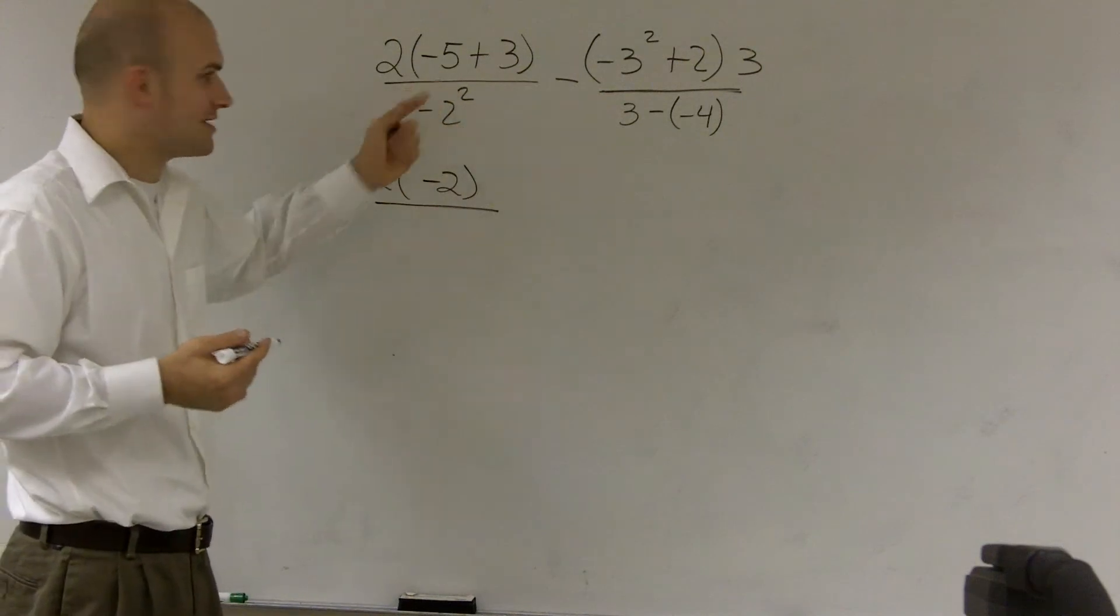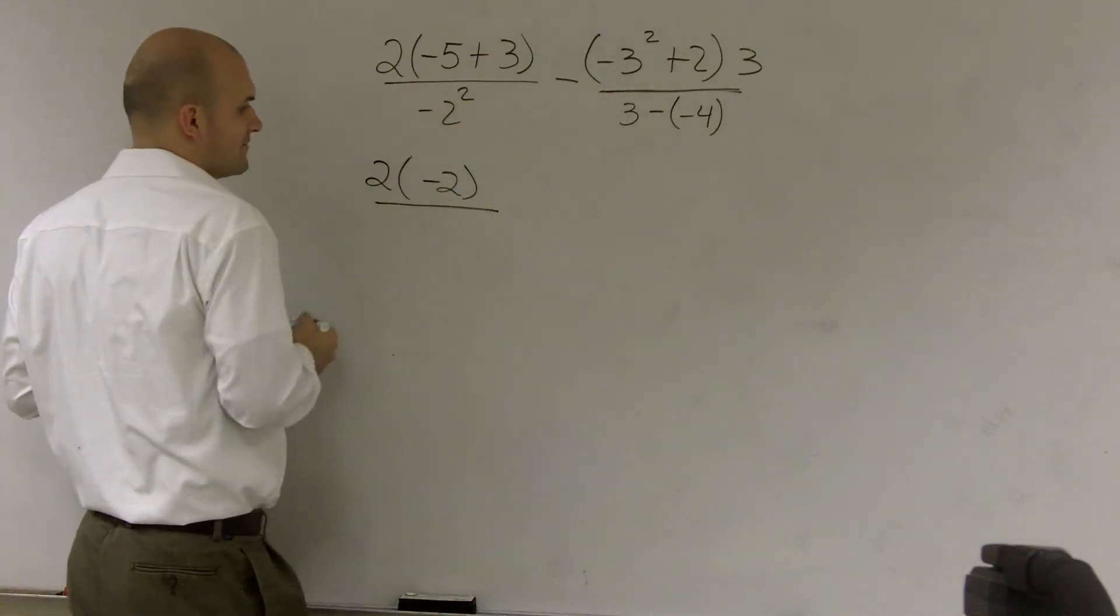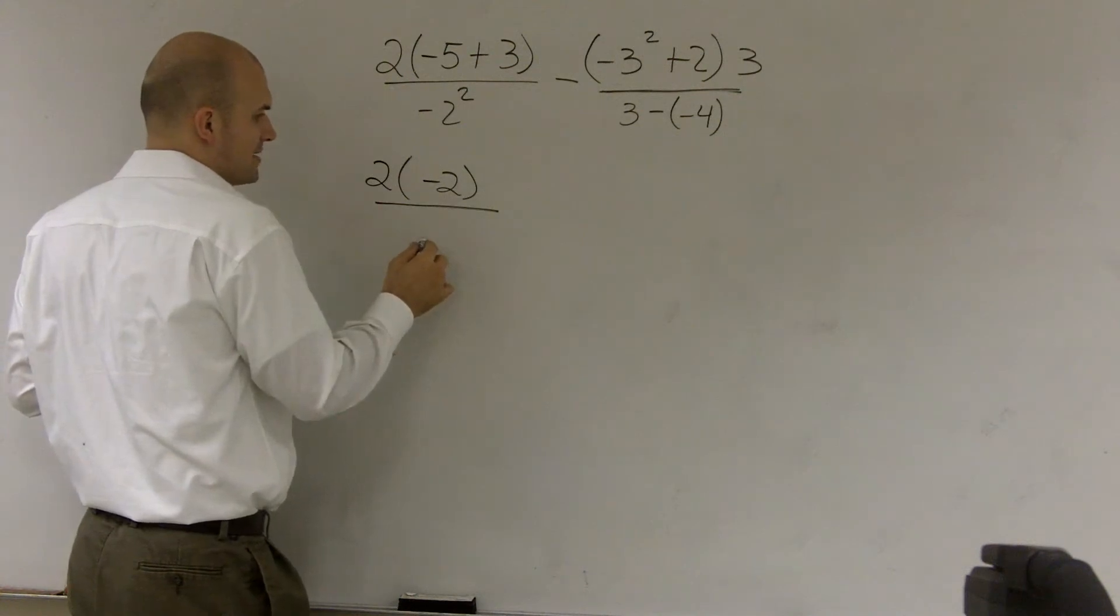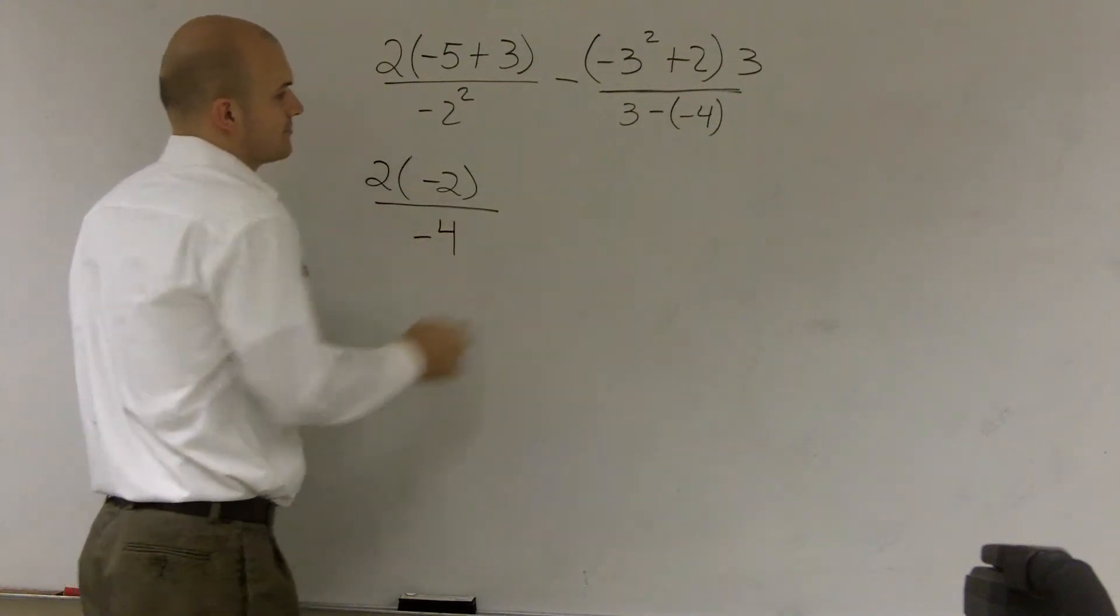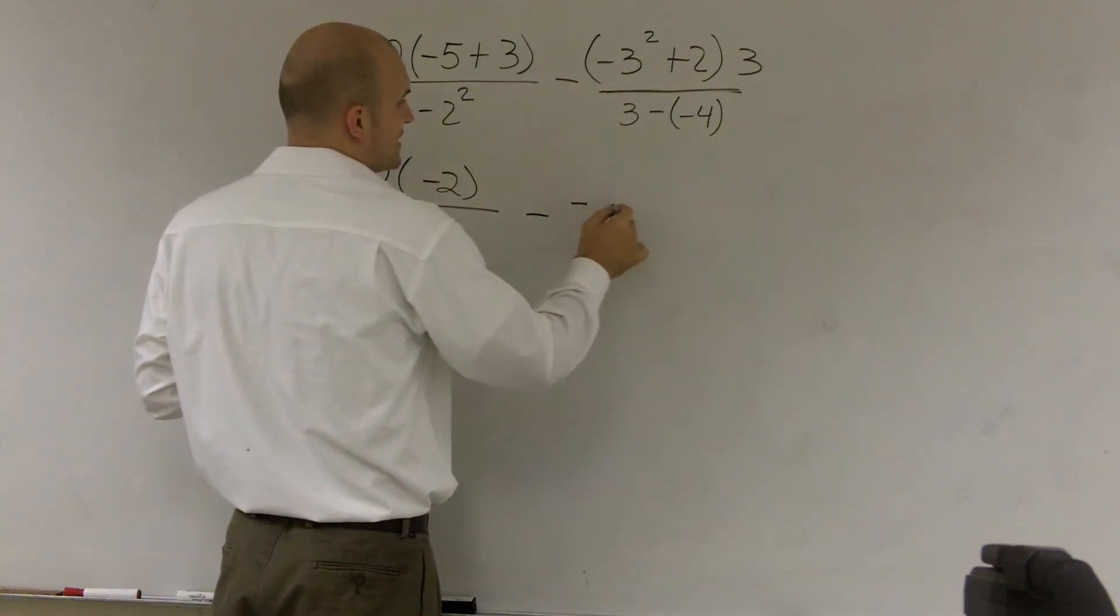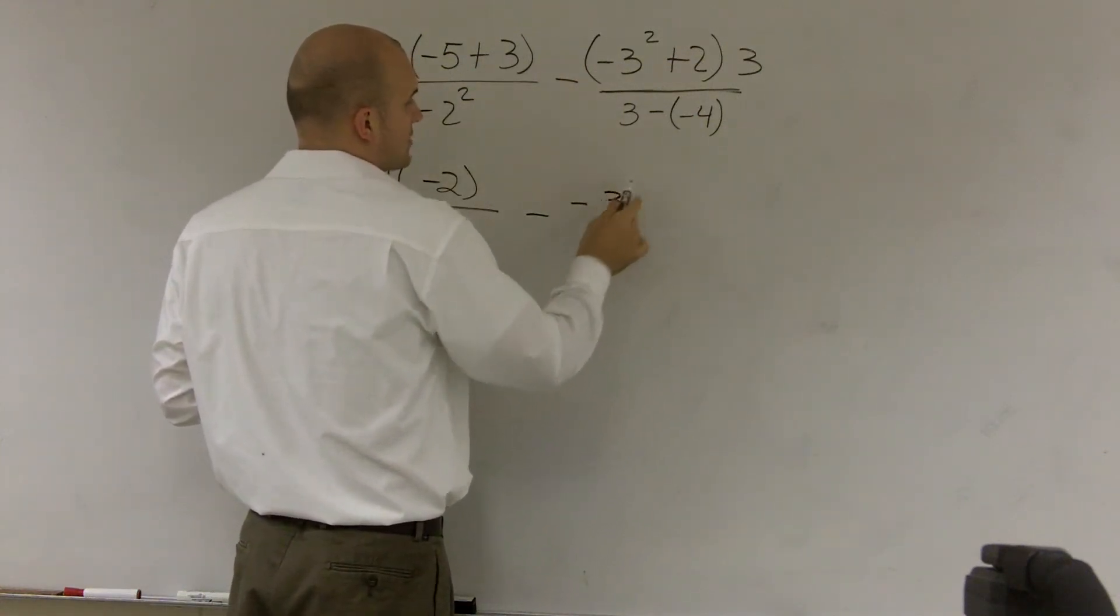And now this doesn't really affect anything. A negative 2 squared is going to give me a negative 4. Minus, a negative 3 squared is going to give me a negative 9.